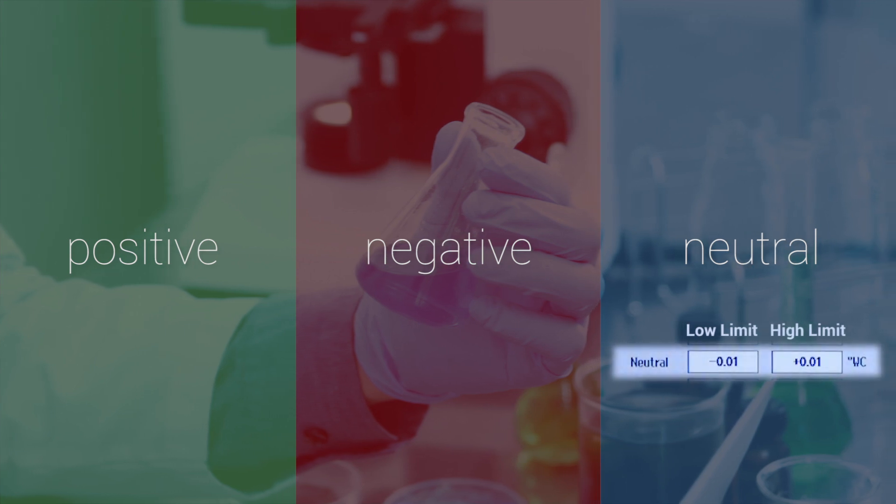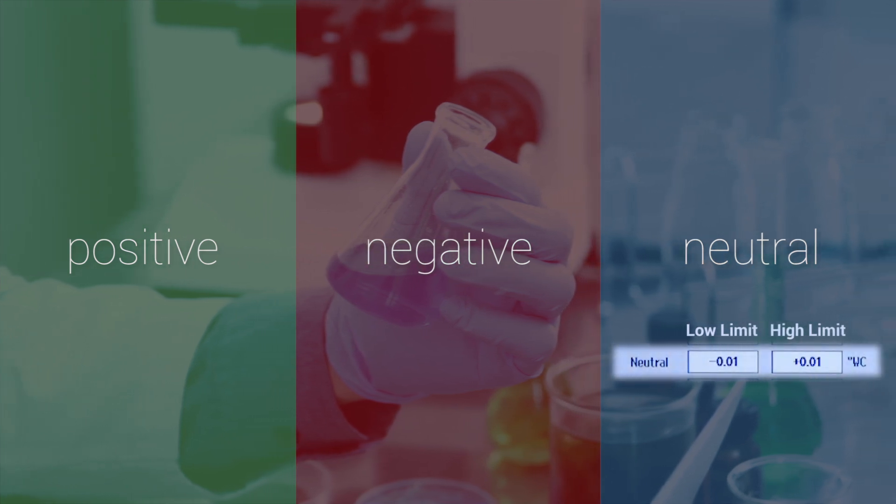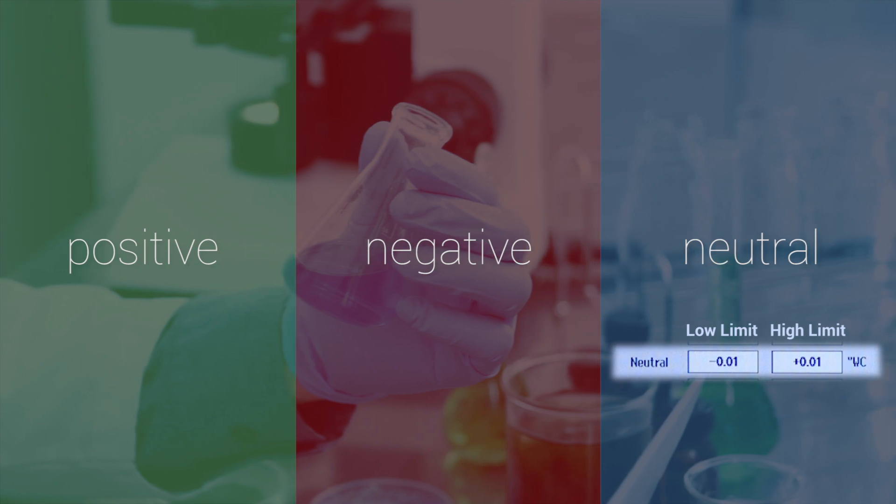A neutral room will have the high alarm set point in the positive pressure range and the low alarm set point will be a negative number.